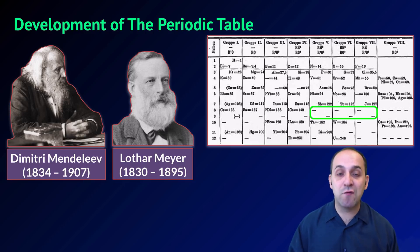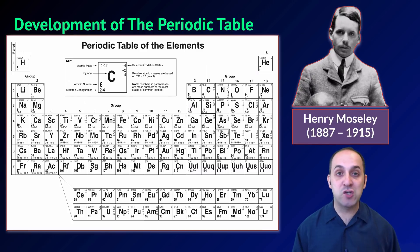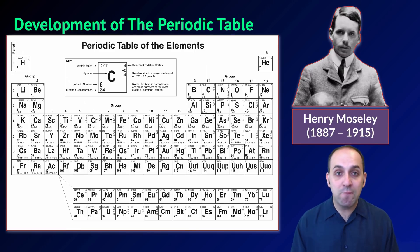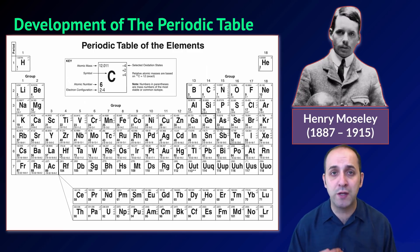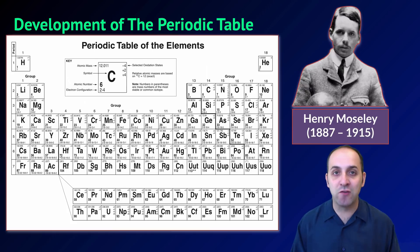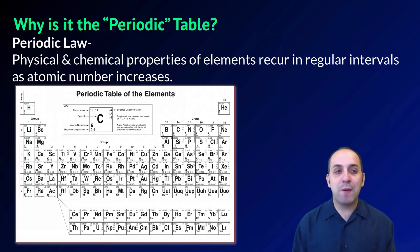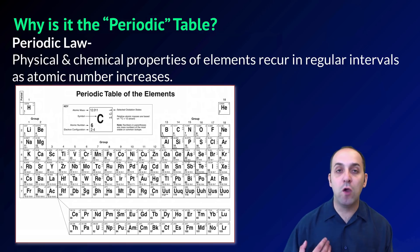Of course, he did arrange everything by mass, and that's not really how things are done on the modern periodic table. The modern periodic table is arranged by atomic number — the number of protons that the atoms have. This arrangement was formalized by Henry Moseley, a British chemist, who then volunteered to fight in World War I and was unfortunately killed almost immediately, prior to when he probably would have won a Nobel Prize for this work. So the modern periodic law states that the physical and chemical properties of elements will recur in regular intervals as the atomic number increases.